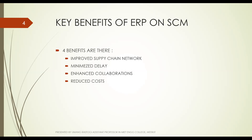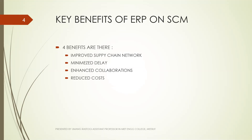The third benefit is enhanced collaboration. ERP helps organizations maintain control over all suppliers and distributors, creating the ability to know what they are doing at all times. ERP bridges the gap between supply chain partners. The fourth benefit is reduced cost. ERP can help reduce expenses in many ways, including improved inventory management and facilitating just-in-time or quick response models, which eliminates the strain around raw material availability and the need for storing raw goods.